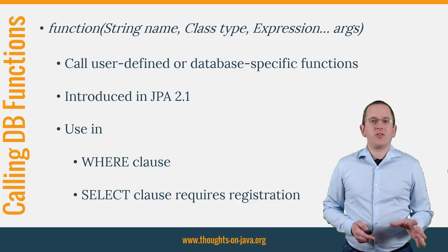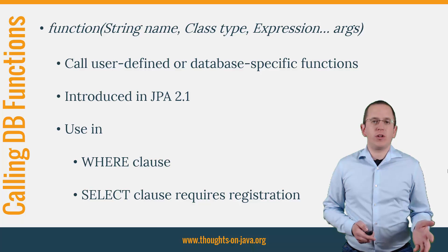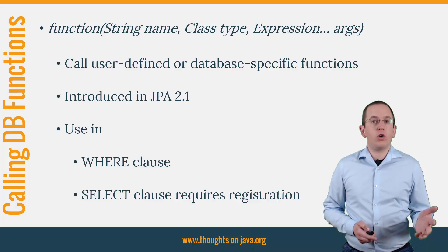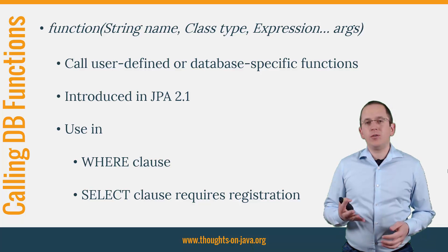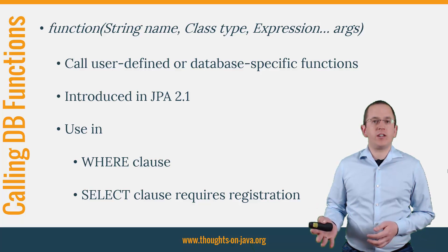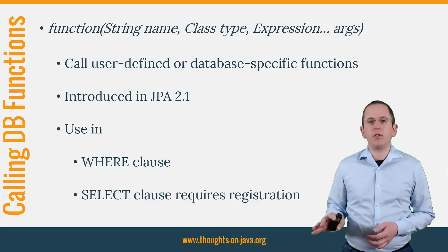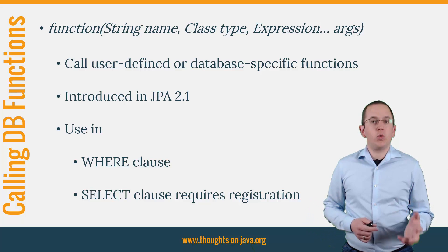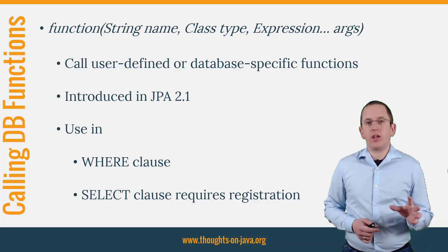Since JPA 2.1, you can use the function method of the CriteriaBuilder to call user-defined or database-specific functions. You need to provide the name and the expected result type of the function as the first two parameters, and you can provide one or more expressions which will be used as function arguments.